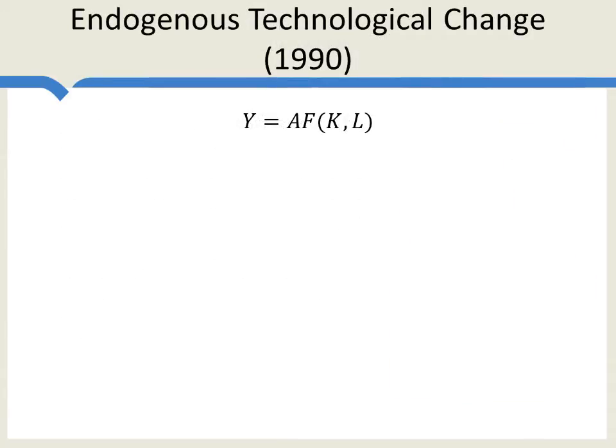Romer's most famous paper is called Endogenous Technical Change. This is a monumental paper, a foundational paper in new growth theory, and it has led to a huge outpouring of work in growth theory. We won't be able to discuss the paper in much detail, but let me just give you an essence of where it came from.